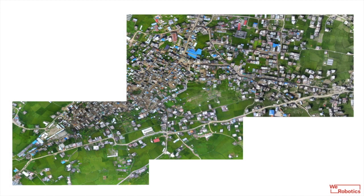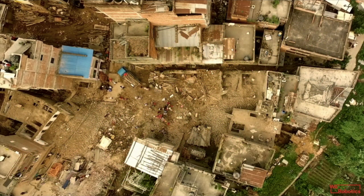Because the faster we can assess the damage and the needs, the faster local communities can get the aid that they need. By taking this course, you'll understand the different information products that one can produce using high-resolution aerial data. This is an orthorectified mosaic, a geo-referenced map of a heavily disaster-affected area outside of Kathmandu, Nepal after the earthquake. You can zoom in directly, basically to the street level, to carry out damage assessments.